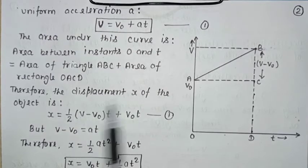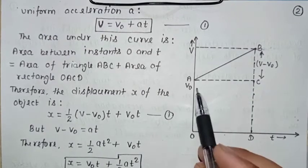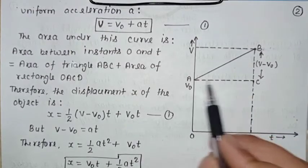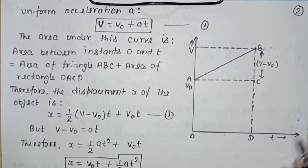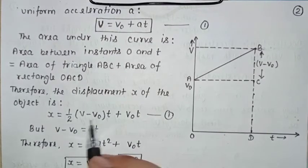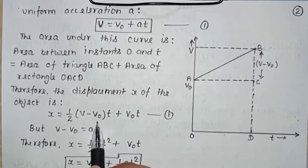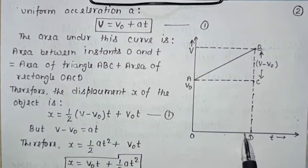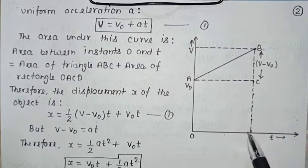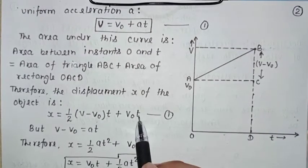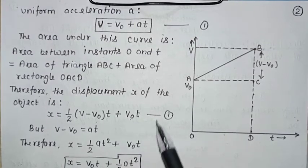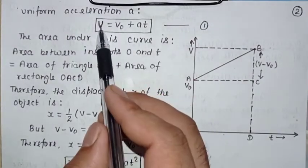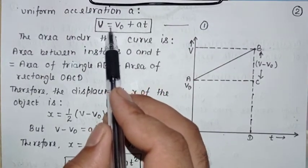Now we talk about the triangle: area = ½ × base × height. The base is T (time from start to end) and the height is (V − V₀). For the rectangle: area = length × width, where length is T and width is V₀. From the first equation, V − V₀ = at.